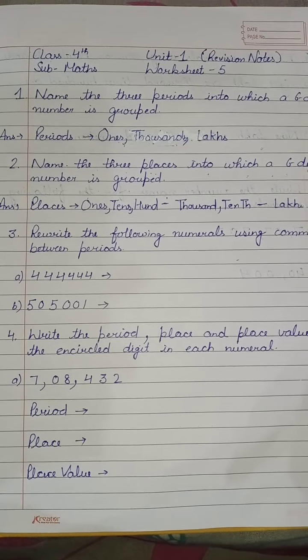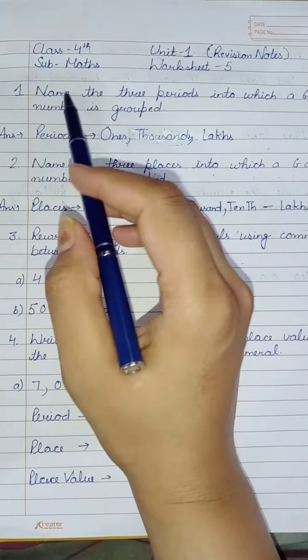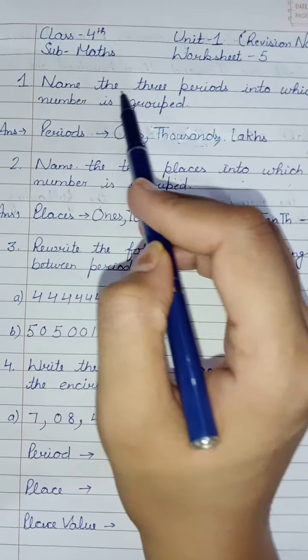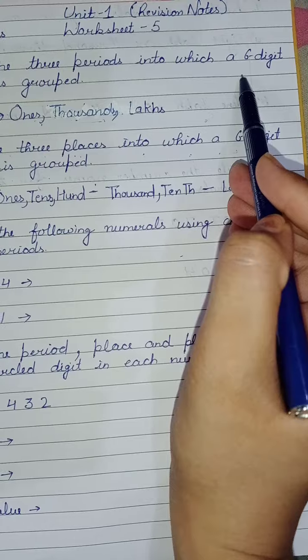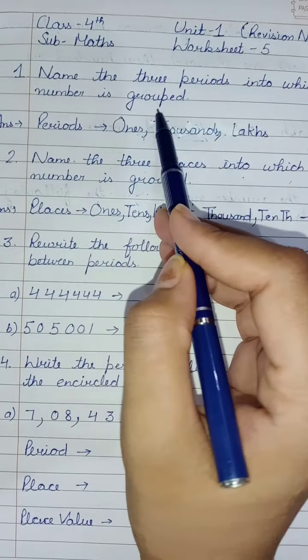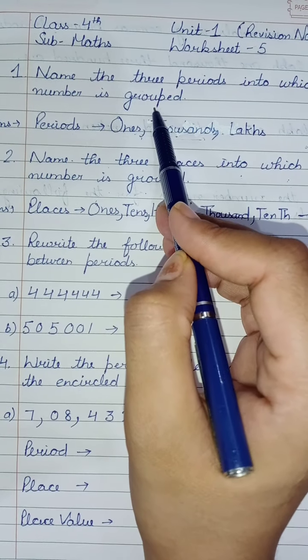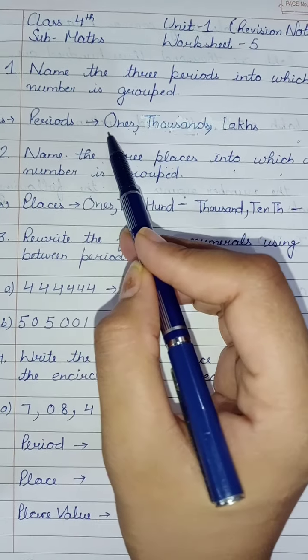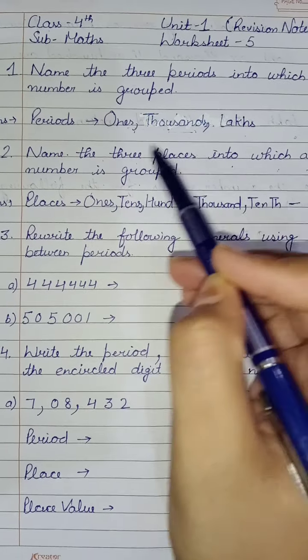We will start from the first question: Name the three periods into which a six digit number is grouped. You have to tell three periods which six digit number are grouped. The periods are ones, thousands, and lakhs.